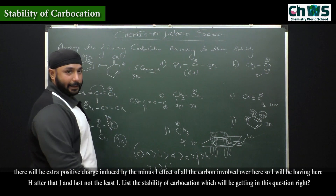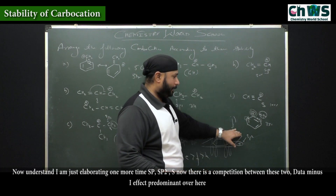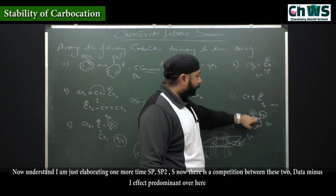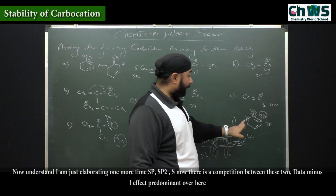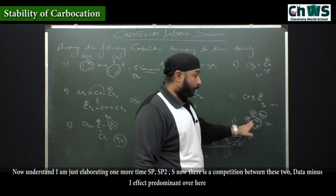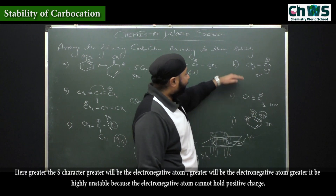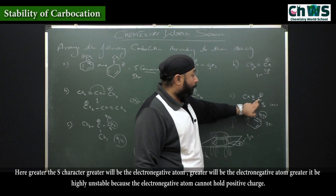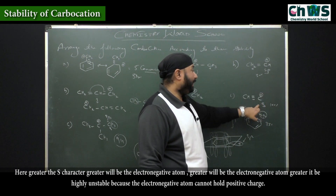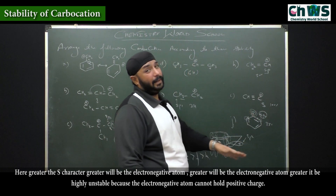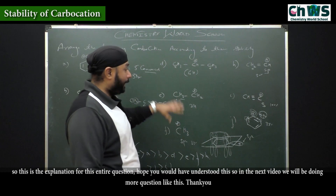So this is the stability order. To elaborate once more: sp, sp2, pure s — there is competition. Greater minus-I effect predominates, positive charge increases, making it unstable. Greater s character means greater electronegativity, and a highly electronegative atom cannot hold a positive charge and is highly unstable. This is the entire explanation for this question.